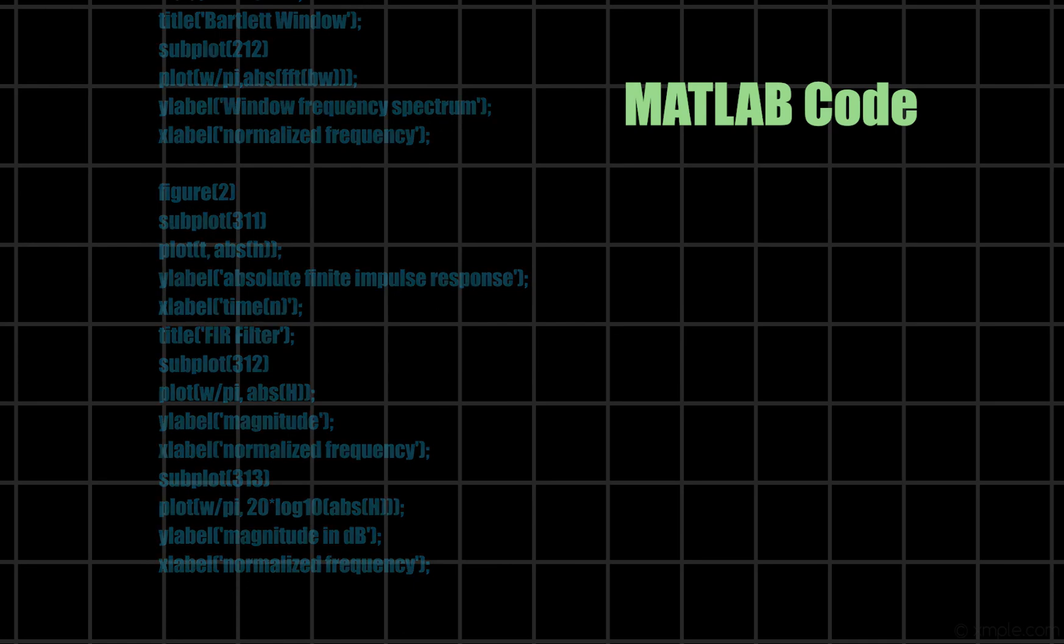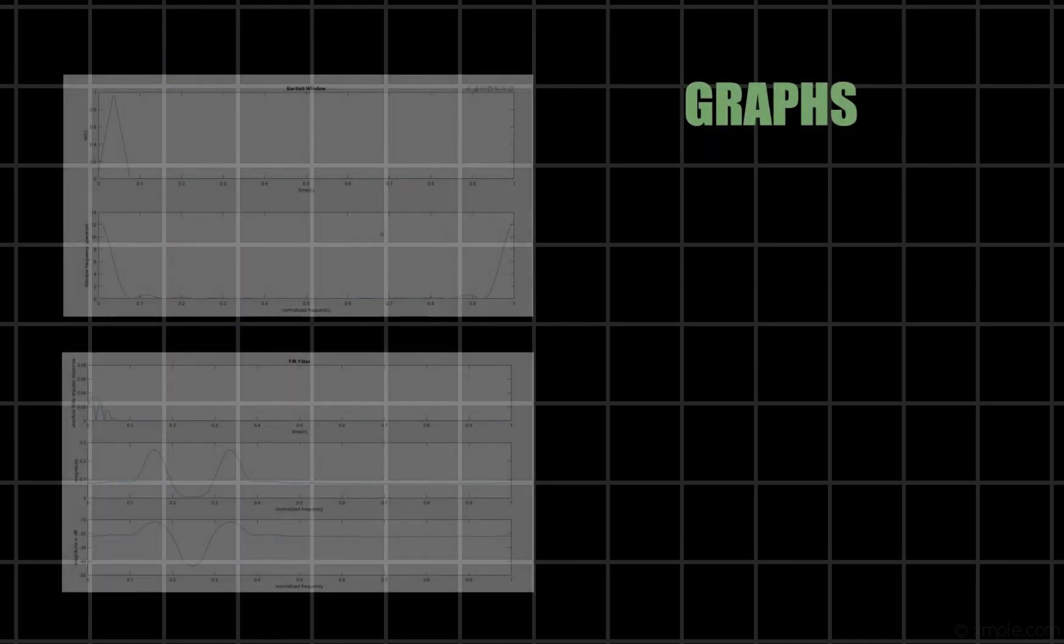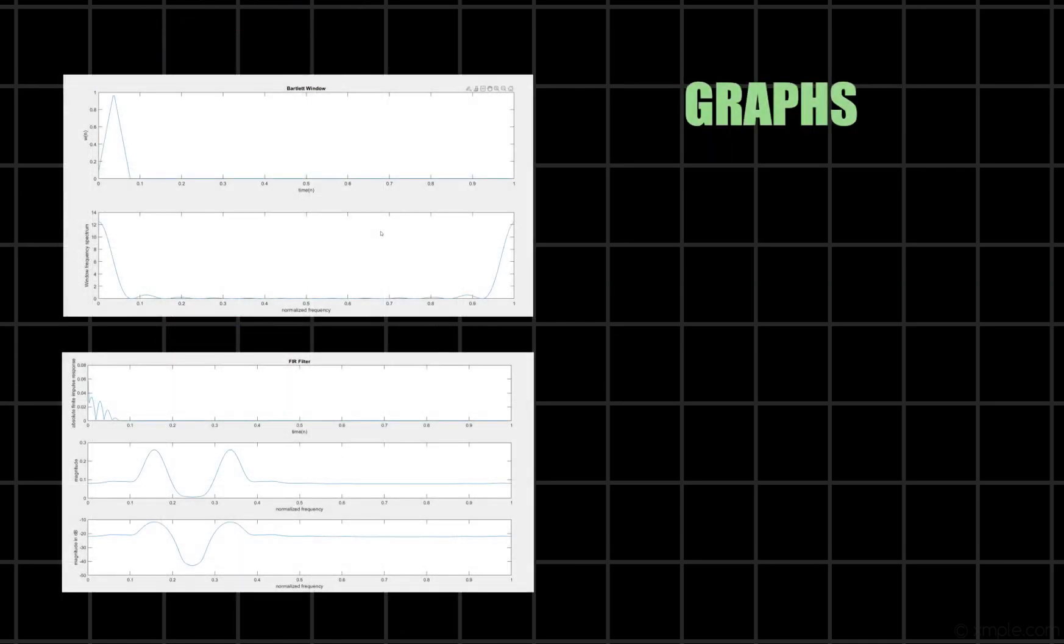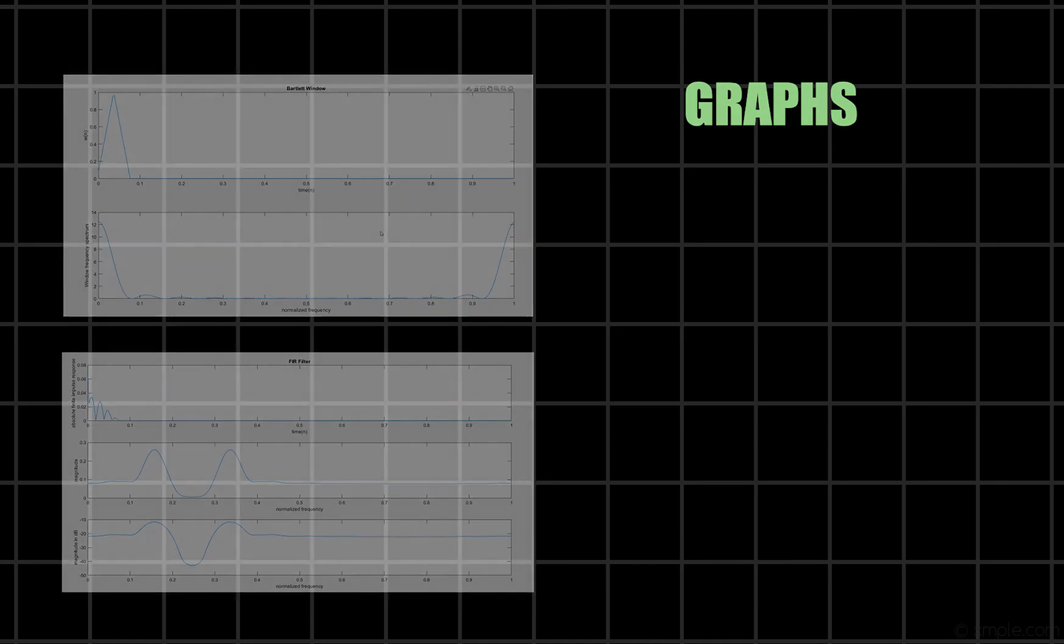From the graphs, we can see the Bartlett window appears to be in triangular shape in time domain. We can see its frequency spectrum. On the other side, we can see the FIR filter graphs. Note, in magnitude in dB graph, we can clearly see max side lobe height is minus 21 dB.